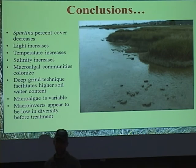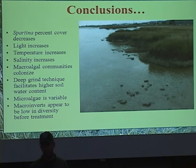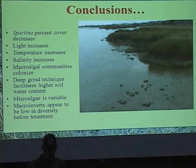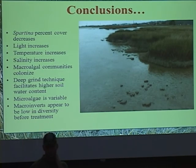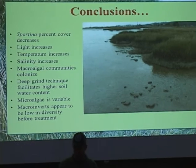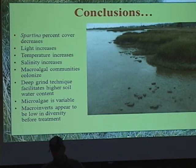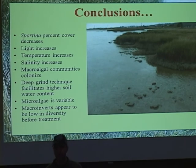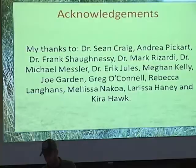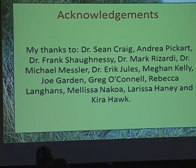So hopefully by the time I'm done, if any of you want to help, I'll have a lot more interesting data. In conclusion: Spartina percent cover decreases when you chop it all down. Light increases, temperature increases, salinity increases, and macroalgal communities begin to colonize. The deep grind technique facilitates higher soil water content. Microalgae is all over the place and I'm curious what the next round of sampling will show. Macroinvertebrates appear to be low in diversity before treatment — basically oligochaetes, isopods, and amphipods are the only things I'm finding, and there aren't very many of them. Thanks to Sean Craig, Andrea, Frank Shaughnessy, Mark Rosardi, and all these people. Questions?